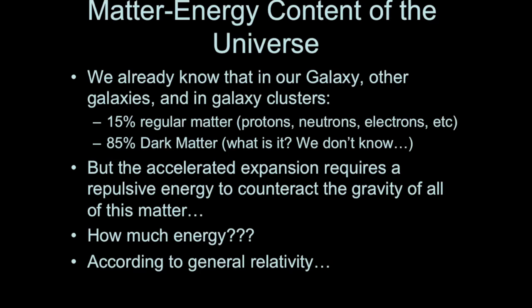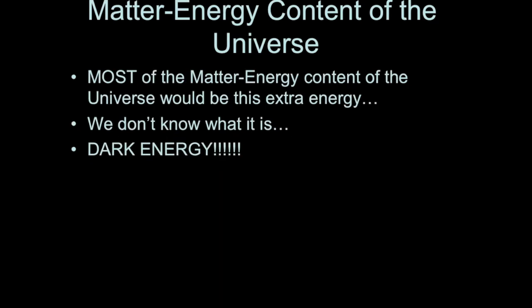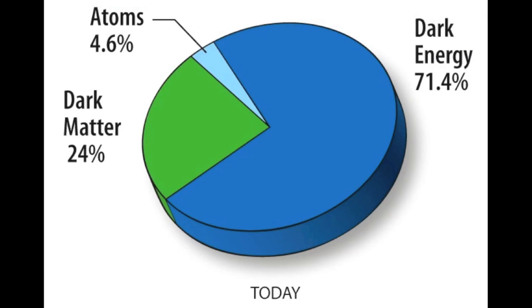According to Einstein's equations, there is a component predicted by something called the cosmological constant. To account for the accelerated expansion astronomers actually measure, most of the universe's matter-energy content would be this repulsive energy — called dark energy. According to our current best measurements, only a little less than 5% of the entire universe is regular matter, about 24% is dark matter, and over 70% is dark energy. We are still trying to figure out what dark energy actually is.